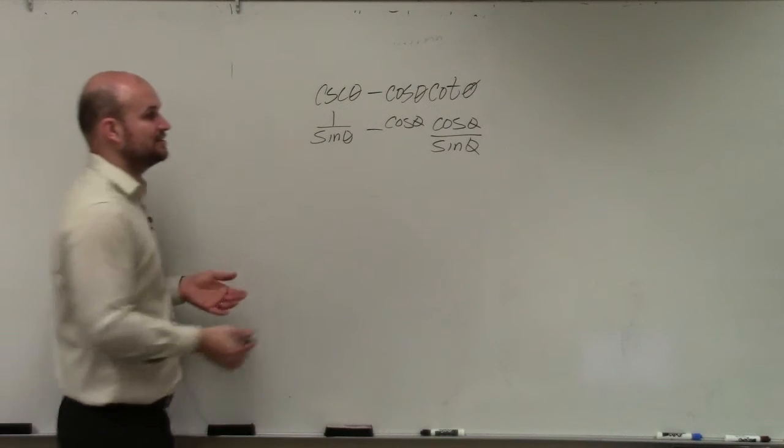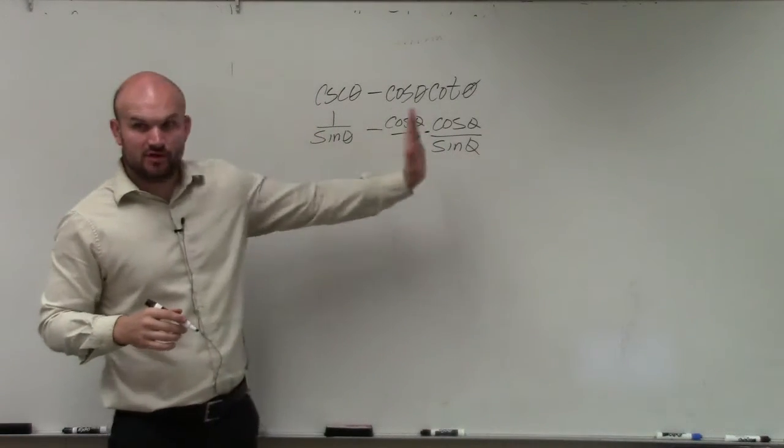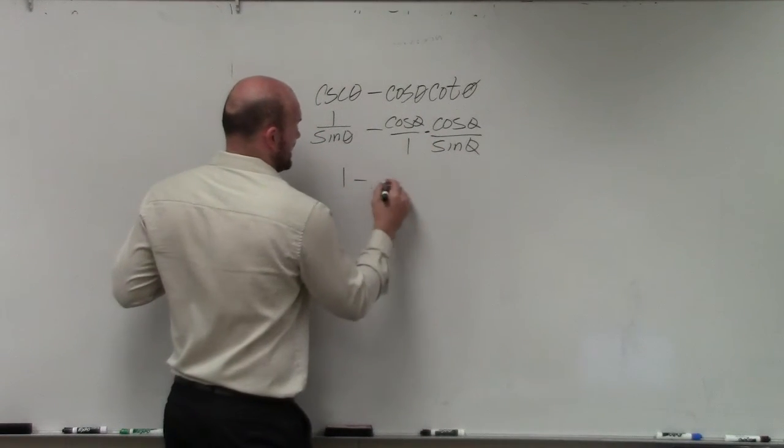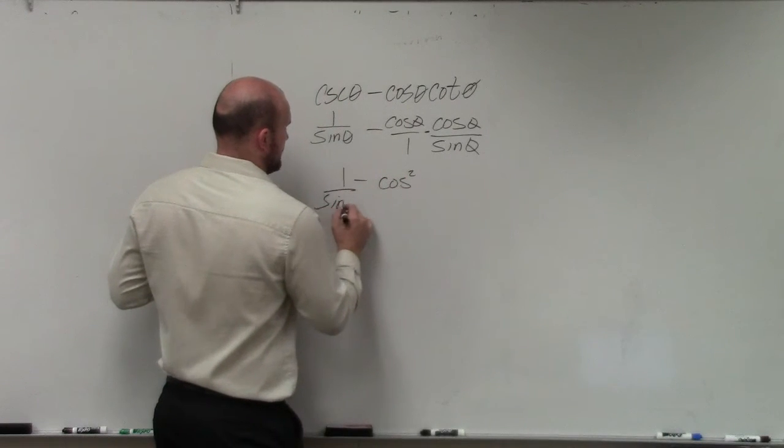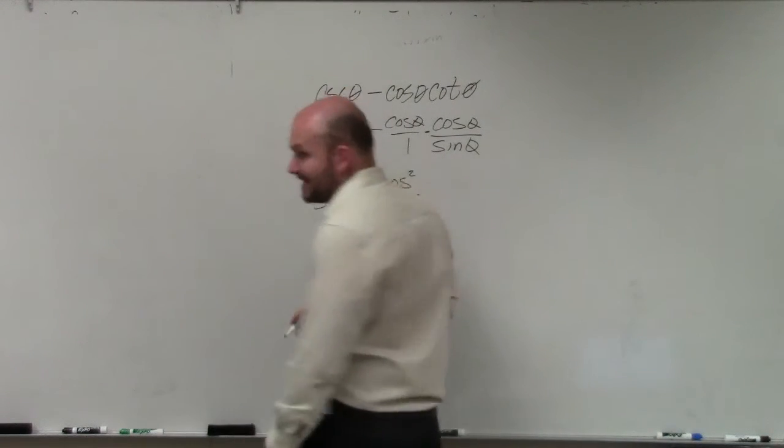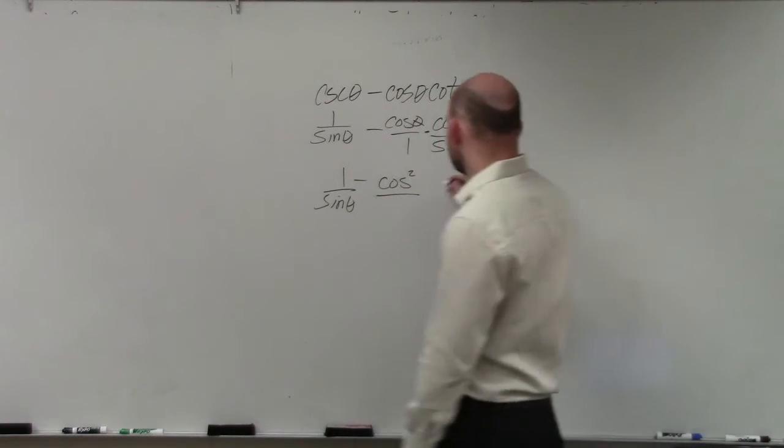Now everything is written in terms of sines and cosines. So therefore, I can multiply these two. So I get 1 over sine theta. Sine times sine is sine squared. So would it make sense that cosine times cosine is cosine squared? Yes.